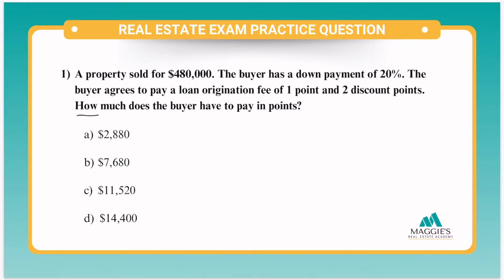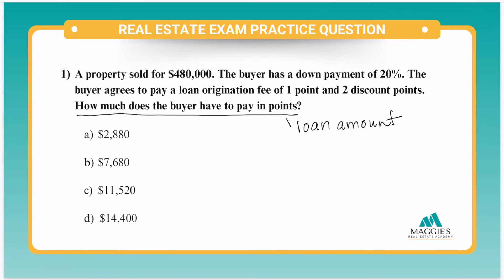In this question, we see that it's asking how much does the buyer have to pay in points? So remember, points are always attached to the loan amount. So we have to find the loan amount. If they gave us how much the property sold for and they gave us the down payment amount, we can figure that out. So let's do that.